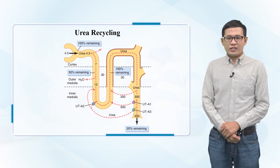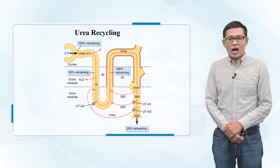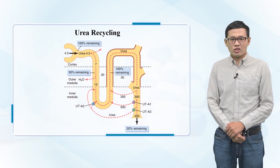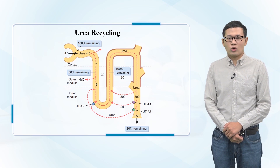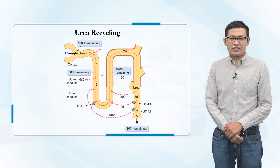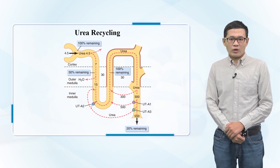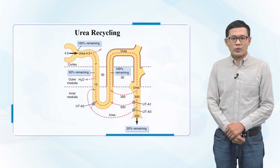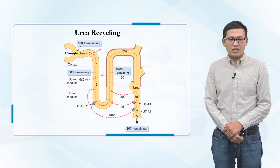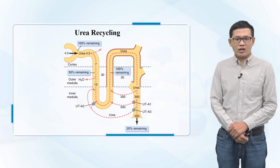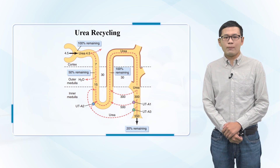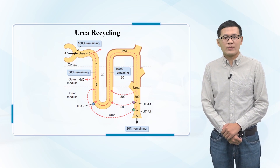The loop of Henle, DCT, and collecting ducts are impermeable to urea, while the salty interstitial fluid passively draws even more water out of the collecting ducts. Some urea passively leaves into the medulla as well, making the medulla even more salty, and in return, more effective at drawing out water from the ascending limb or a few steps back.